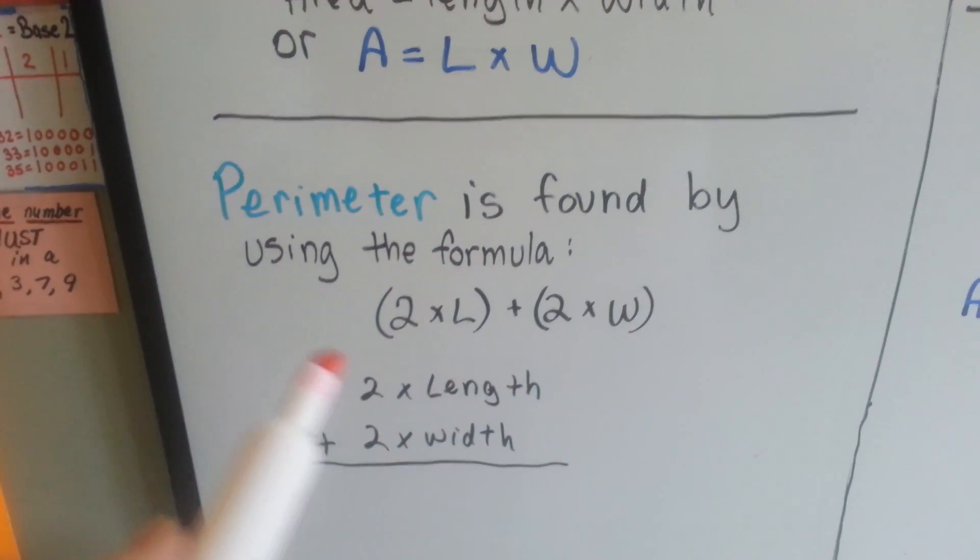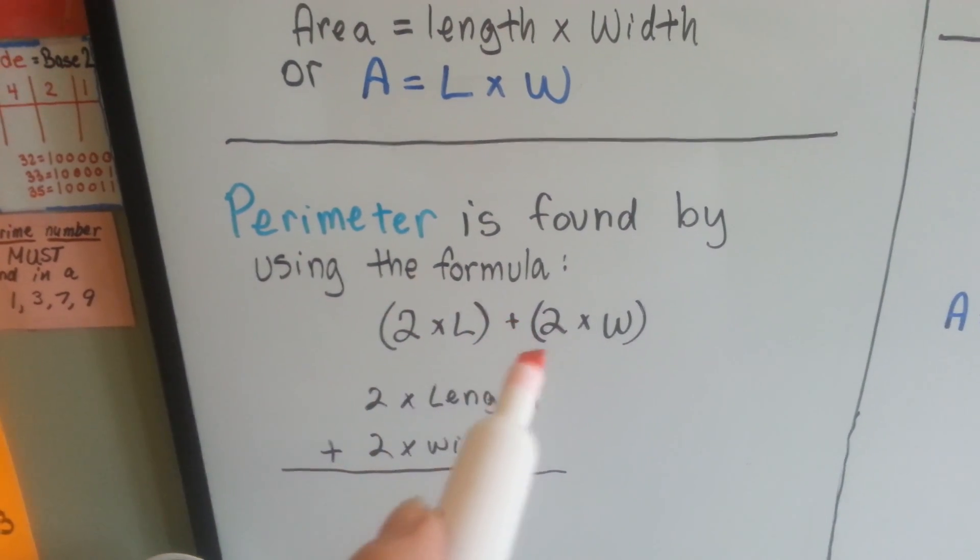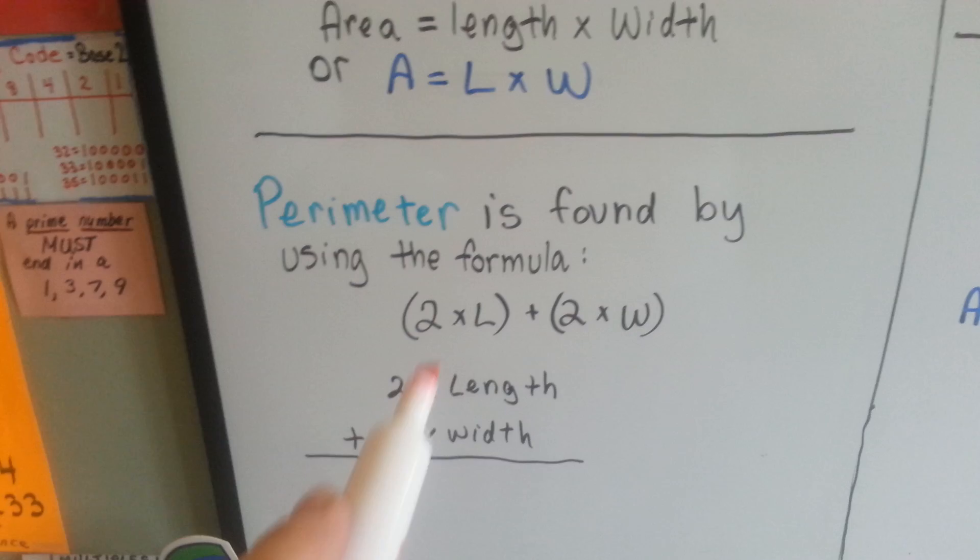Do you remember that perimeter is found by using the formula, 2 times length plus 2 times width, and that you add them together?